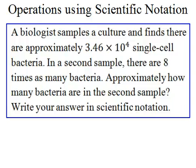Now that you're more comfortable with writing numbers in scientific notation, I want to go over how they might be applied. So in this example, a biologist samples a culture and finds that there are approximately 3.46 times 10 to the 4th single-cell bacteria.